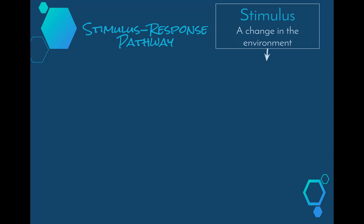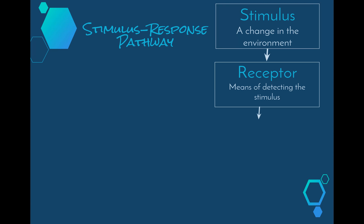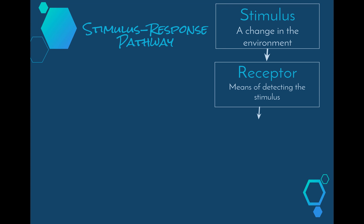Living organisms pick up or receive stimuli using receptors. In their most simple form receptors consist of single cells scattered over the body of an organism. However in many organisms receptors have become concentrated in particular areas to form sense organs such as the eye and the ear. The sense organs contain non-sensory tissue aside from the special sensory tissue that can monitor stimuli.